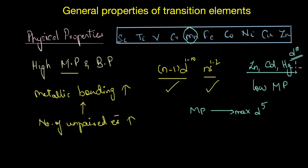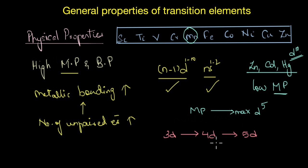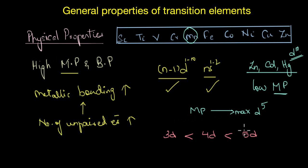As we go from the 3d series to the 4d series to the 5d series, the melting point increases in the subsequent series — that is, the melting point of 4d is greater than that of 3d, and 5d is greater than that of 4d. This is because down the series we have more number of electrons, which means stronger interatomic interaction. Overall, the melting point trend is the same as in the 3d series: it increases to a maximum till d⁵ and then decreases as we go towards the end of the series.